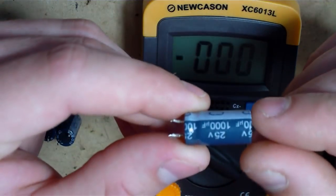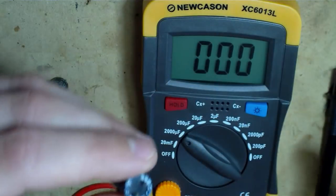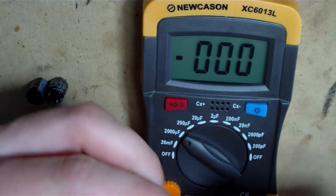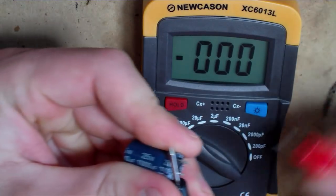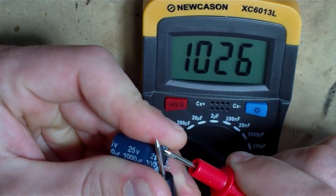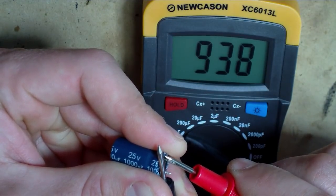Now here's another type of capacitor. It's a 25 volt, 1000UF. So we're going to go ahead and put it on the negative and the positive. And this one's rated at 938. So that's a good capacitor.